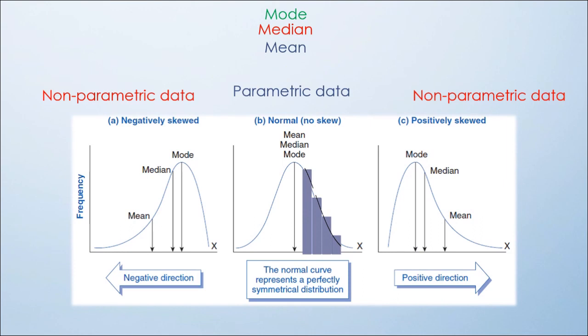Whereas non-parametric data showed skewness, whether negatively or positively. In this model, the frequency plot exhibits shifting of the mean value based on the skewness. Accordingly, the mean value is not suitable to represent the descriptive middle value, and the median or the mode will be more suitable.